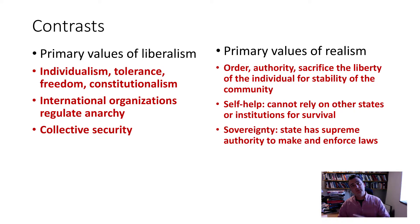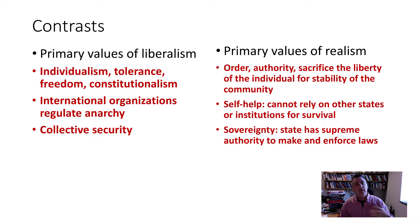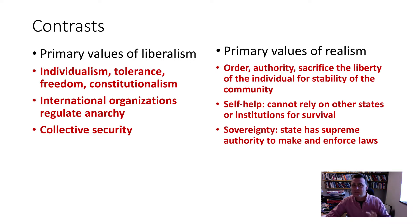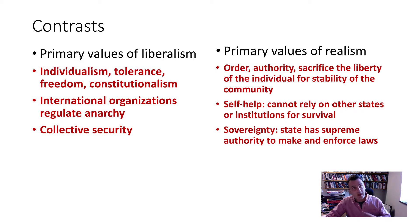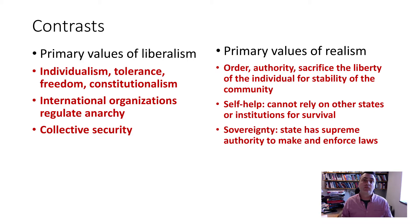Contrasting liberalism and realism: liberalism's primary values are individualism, tolerance, and freedom, with significance placed on constitutional rule, international organizations regulating anarchy, and collective security as enshrined in the UN Charter. Realism's primary values, by contrast, are order and authority — sacrificing individual liberty for the stability of the community. States respect sovereignty and the autonomy of governments without concern for how those governments treat their people. Self-help is the only insurance policy; you cannot rely on other states or institutions for survival, and sovereignty is the most prized possession.